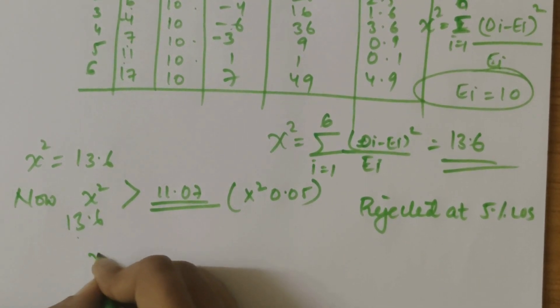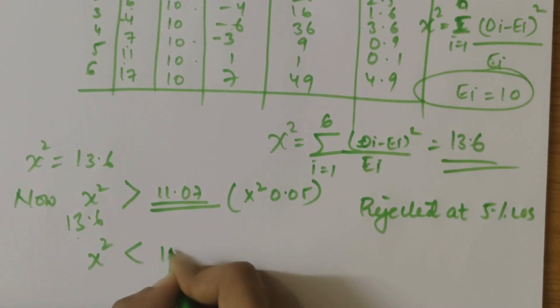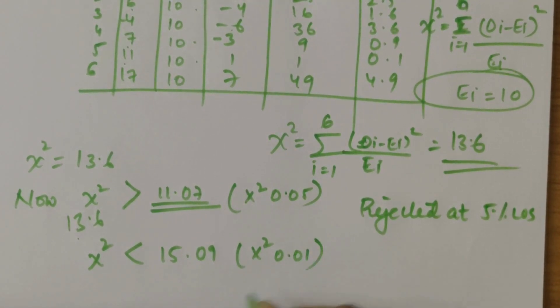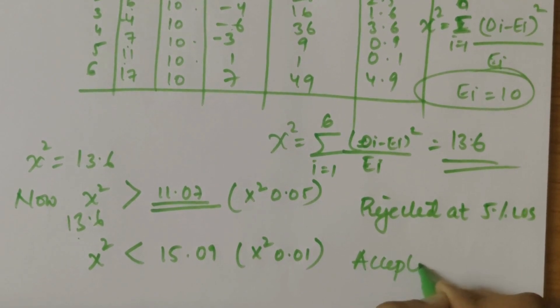Now, computing chi-square is less than 15.09 for 0.01. As the chi-square value is less, it is accepted at 1% level of significance. So the critical value, the chi-square value is less than the critical value, so it is accepted here at 1% level of significance.